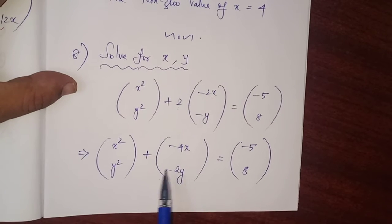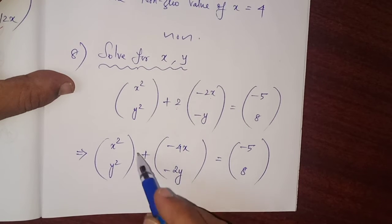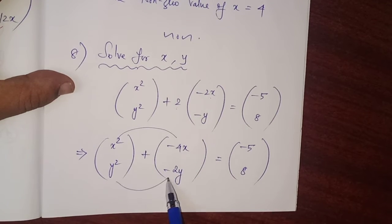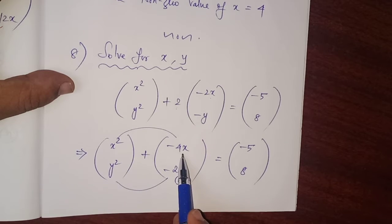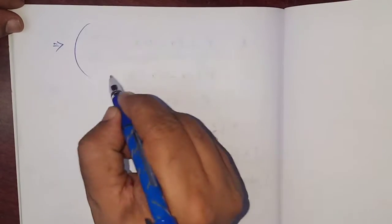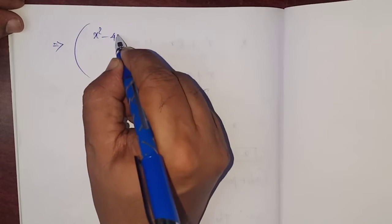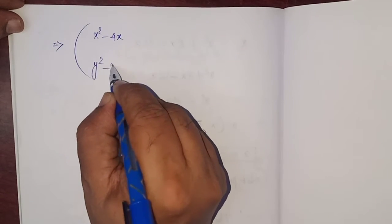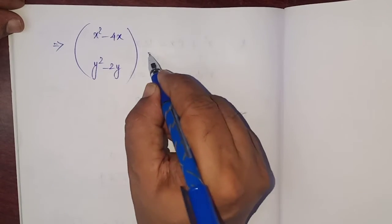We have plus symbol, so add together. Corresponding elements can be added: x squared minus 4x, y squared minus 2y. That is equal to right hand side, minus 5 and 8.